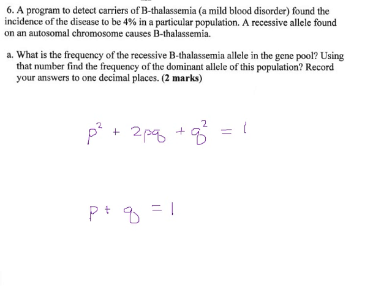Okay, what do we have this time? Carriers of B-thalassemia, a mild blood disorder, found the incidence of the disease to be 4% in a population. A recessive allele on an autosomal chromosome causes B-thalassemia.